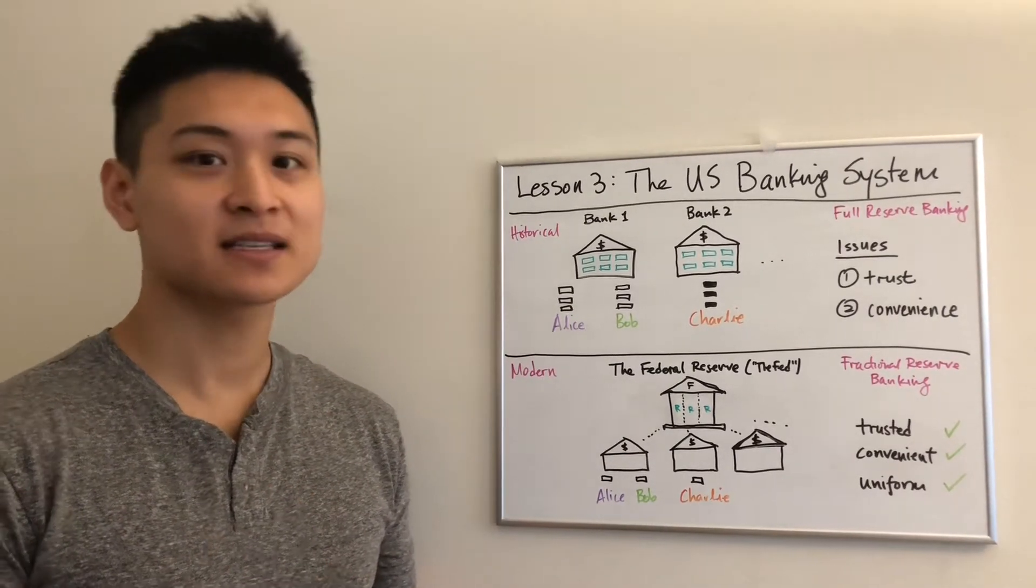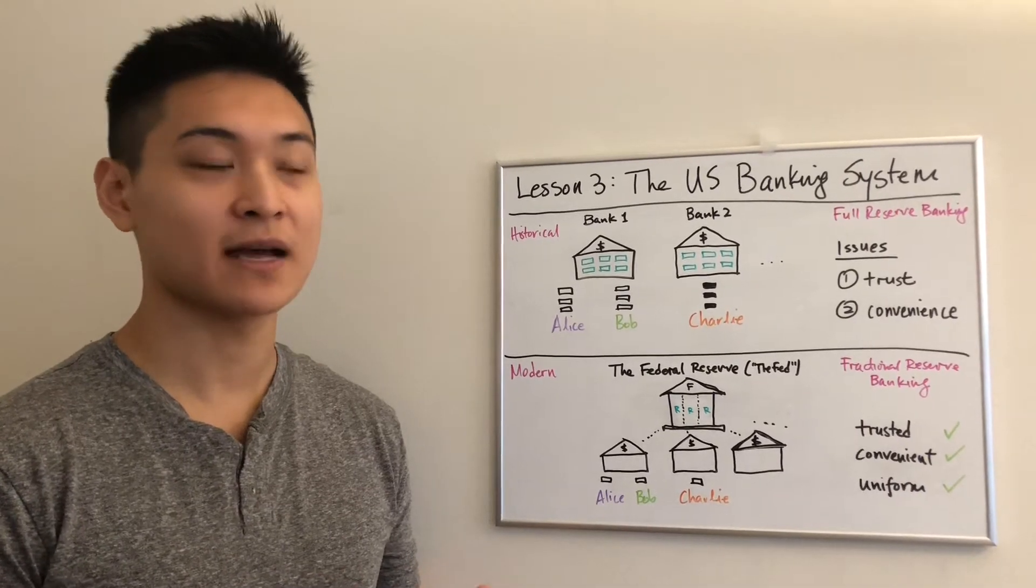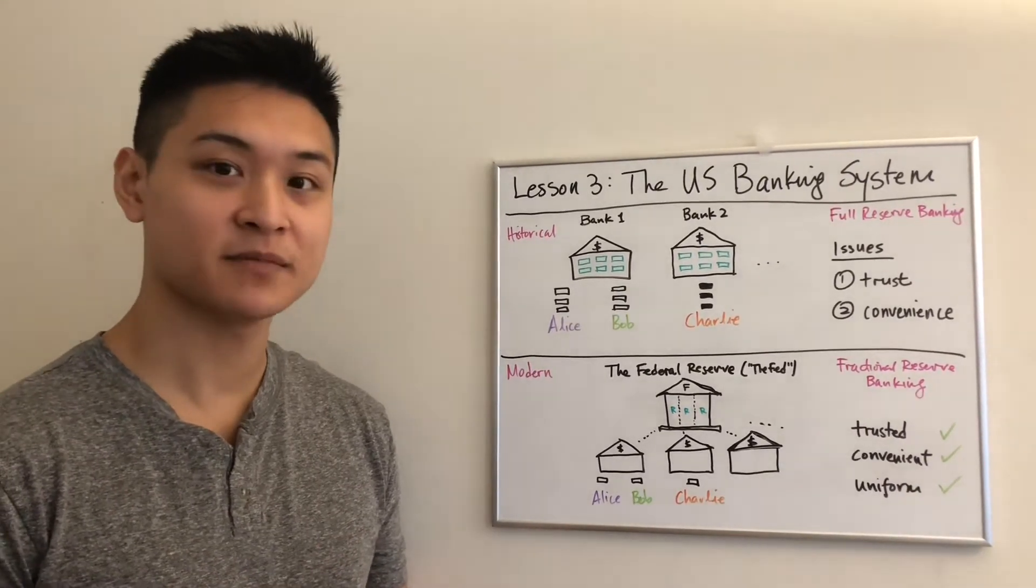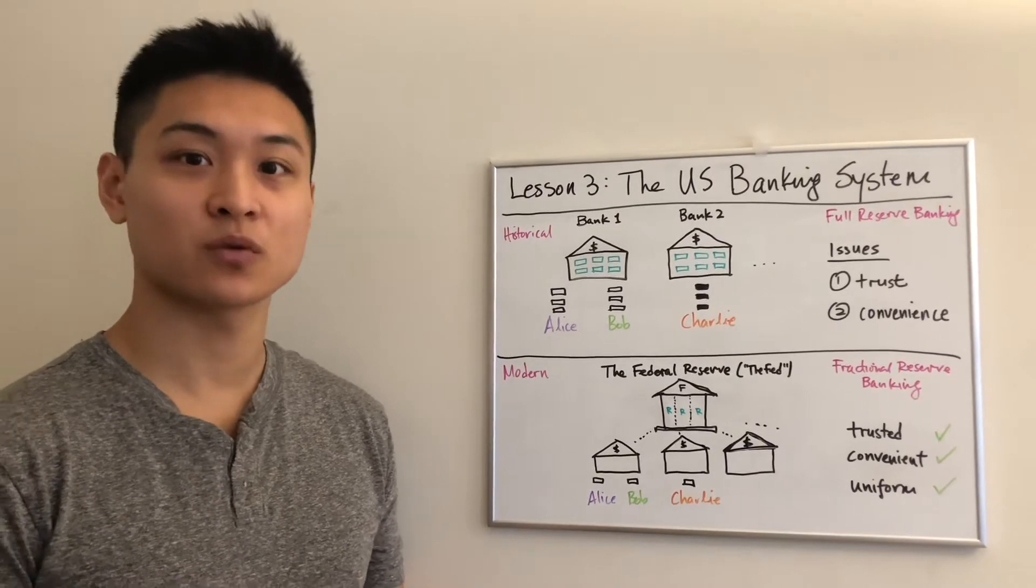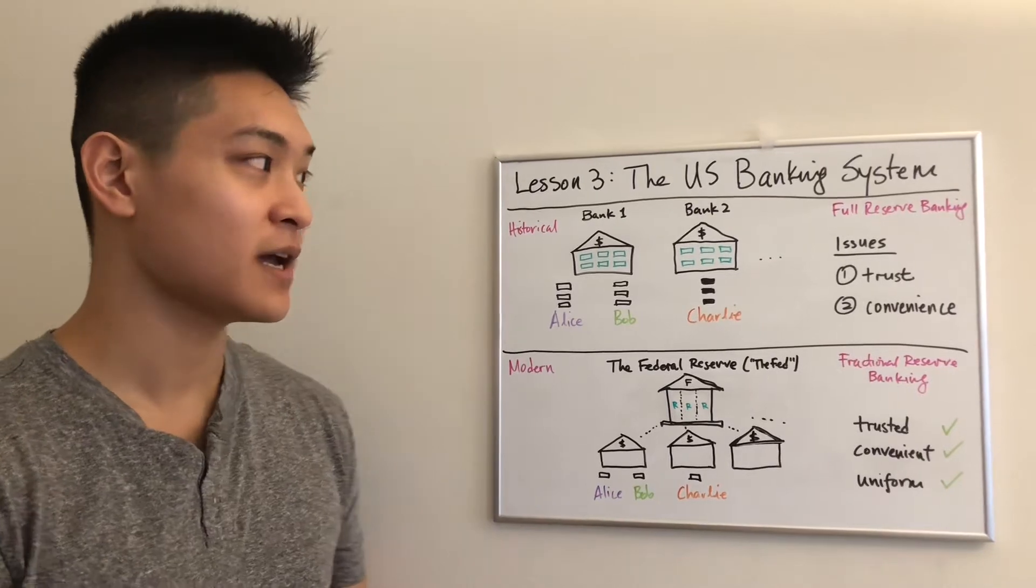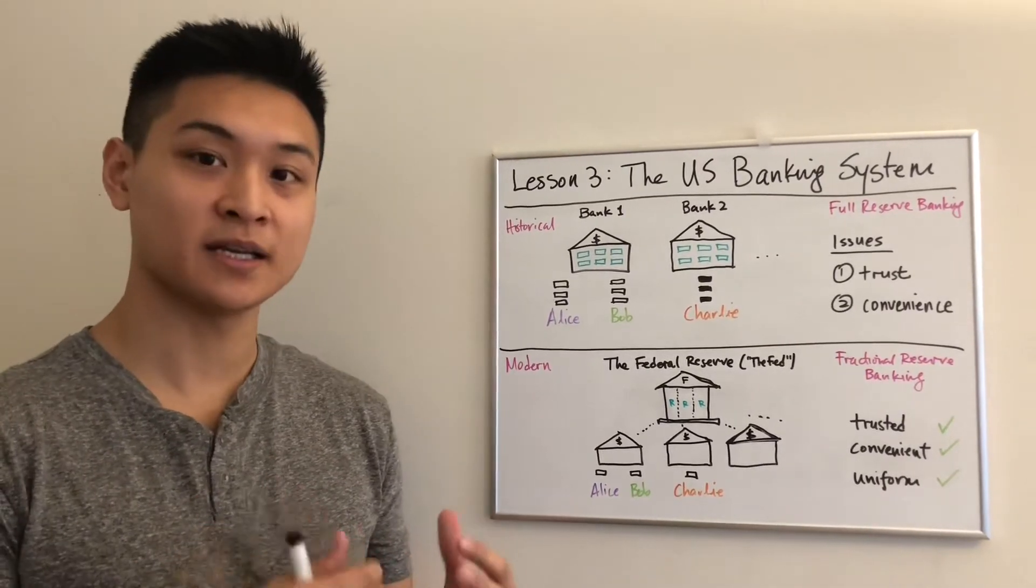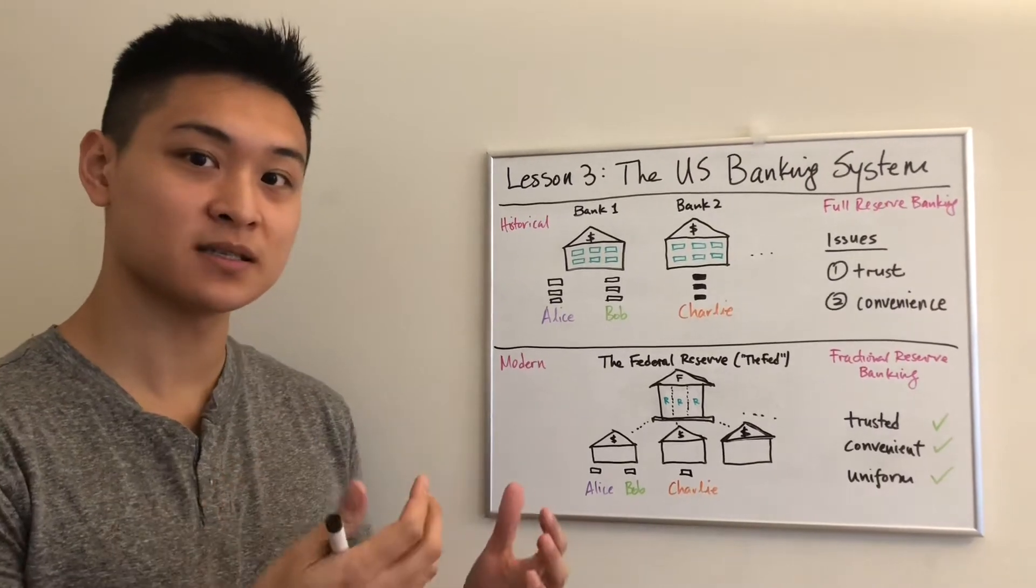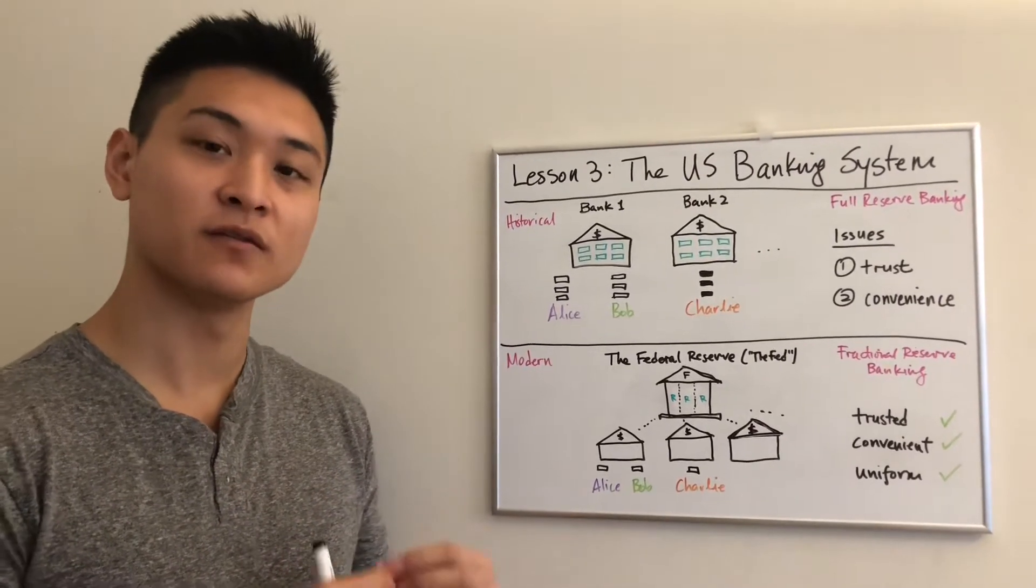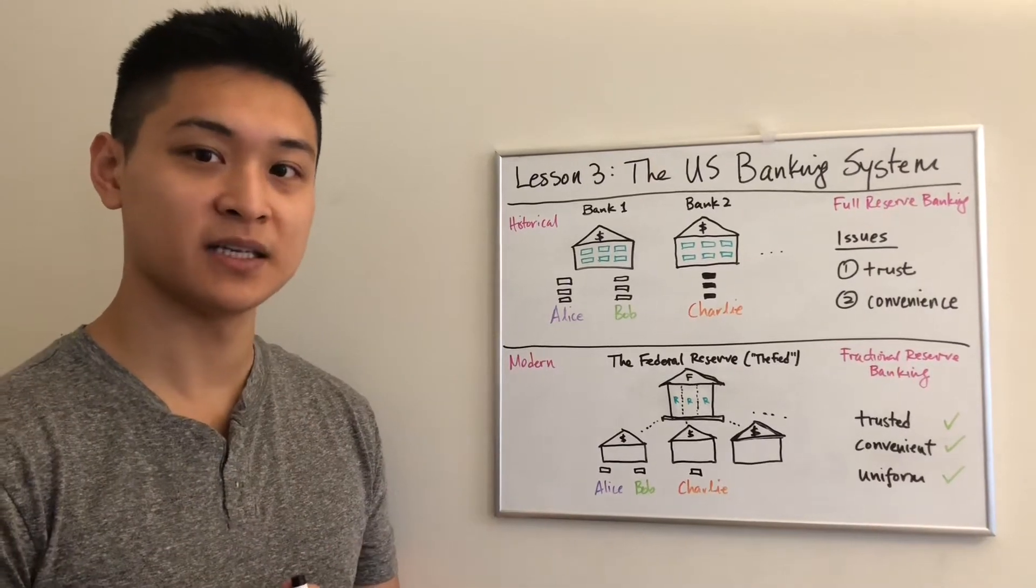Now in the last lesson we explored money and credit and talked about how anything can be money and anyone can issue credit or promises to deliver something of value. The most prevalent form now is credit issued by banks in the form of numbers in a bank account, and we treat that as money today.